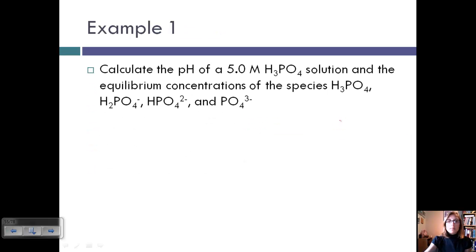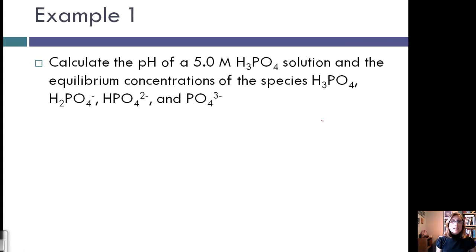So let's look at a few examples. We're going to calculate the pH of a 5.0 molar H3PO4 solution, and the equilibrium concentrations of all the other species: H3PO4, H2PO4-, HPO4-2, and PO4-3. The first thing we're going to do is find the major species. This is not a strong acid, so our major species are H3PO4 and water.